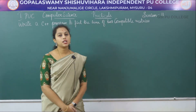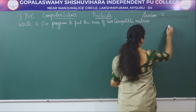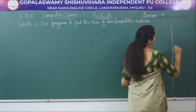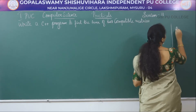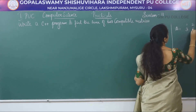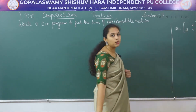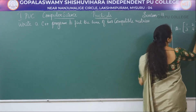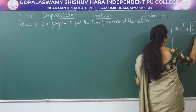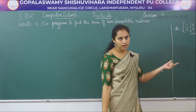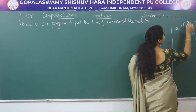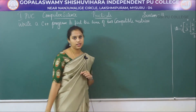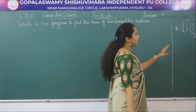So what is a matrix? A matrix is a collection of elements which is arranged in row and column order. So what is the order of this matrix? Here we have two rows and two columns. Hence the order of this matrix is a 2×2 matrix.